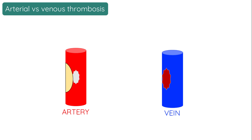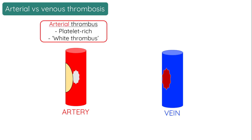Typically, thrombi which form in arteries are made up largely of platelets and are referred to histologically as white thrombi. In arteries, these thrombi typically form on the surface of atherosclerotic plaques, and this is referred to as atherothrombotic disease.